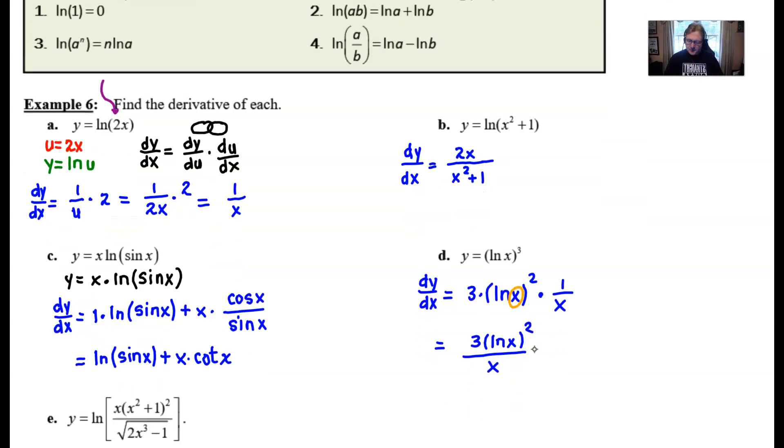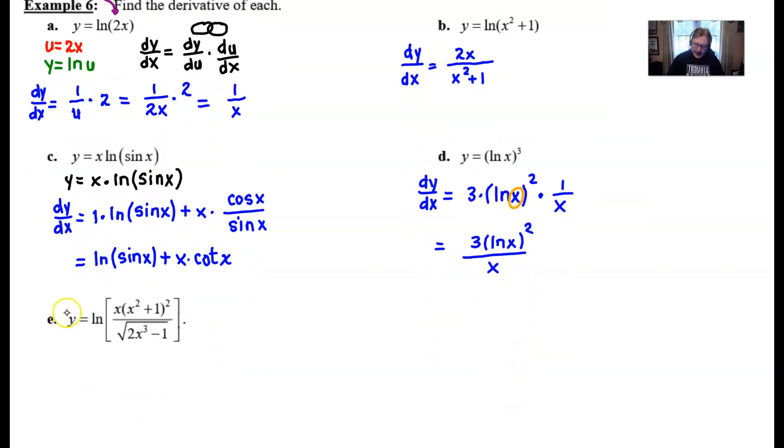Let's move on to our final example, which is our doozy for this problem. y equals the natural log of x times (x squared plus 1) squared all over the square root of 2x cubed minus 1. If you think about u prime over u, should we use it? After all, it's perfectly allowed, it's part of this lesson. But I don't think we would be really eager to take the derivative of u. That would be a very challenging situation.